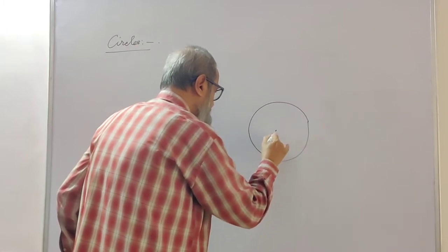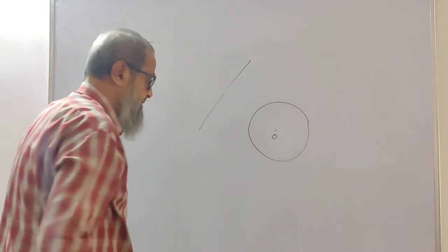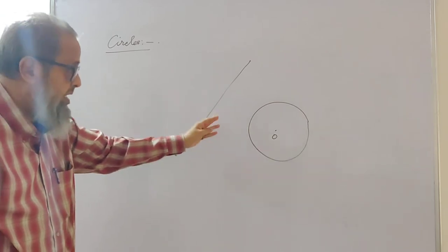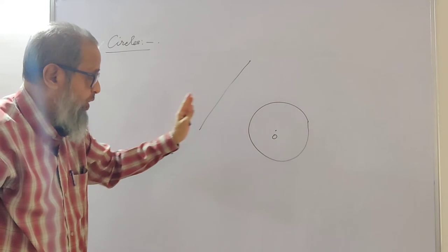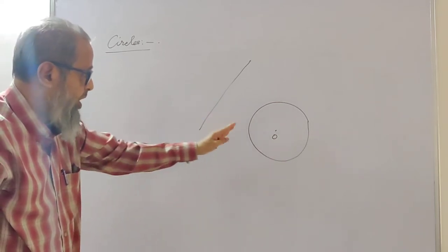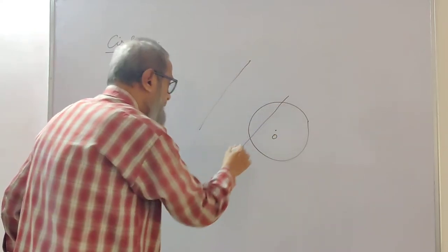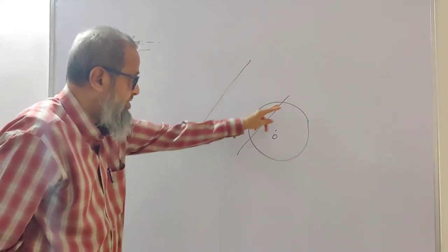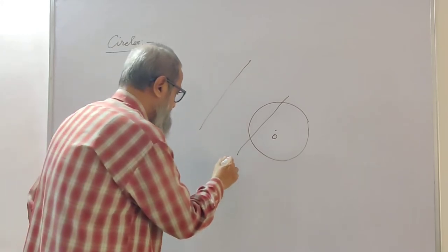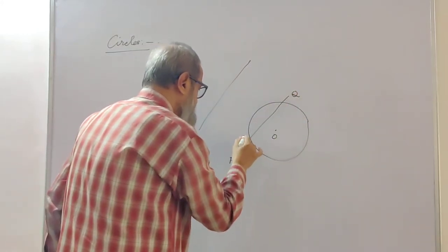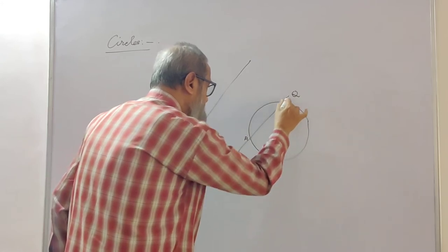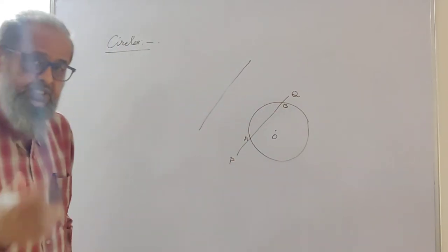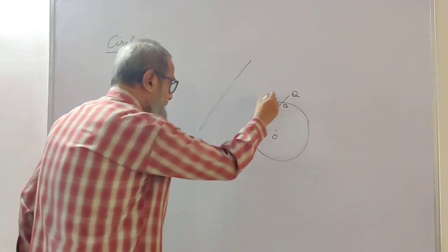Let us say we have a circle with center O and a straight line. These two have nothing in common — they are not in contact with each other. Now if I draw another straight line PQ cutting the circle at two points A and B, this PQ is called a secant, and the portion AB is called a chord, which you already know.